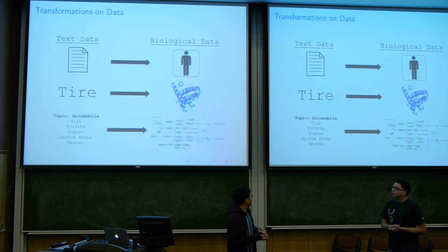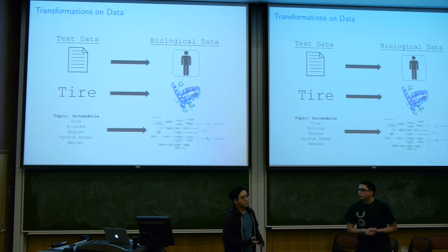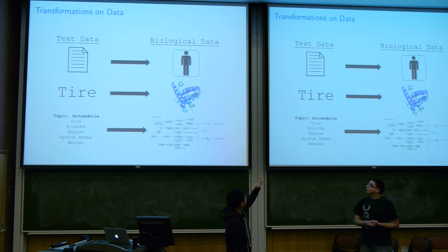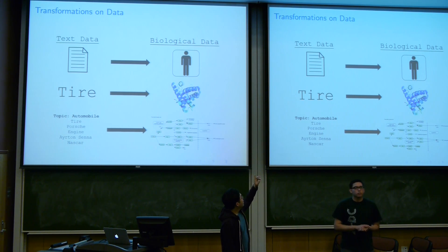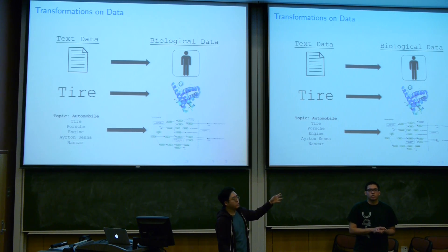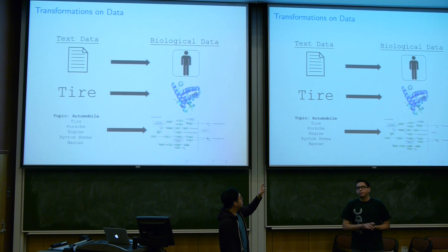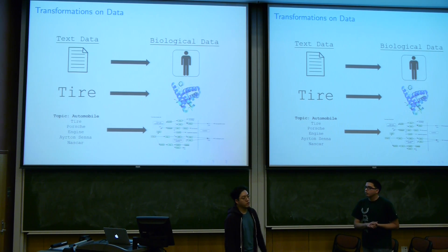LDA has a distribution of topics and the words given the topic. What we did is transform our data so that LDA can work with it. Basically, the document is now patient, the word is protein biomarker, the count of the word is biomarker measurement number, and the topic is possible cancer pathway.